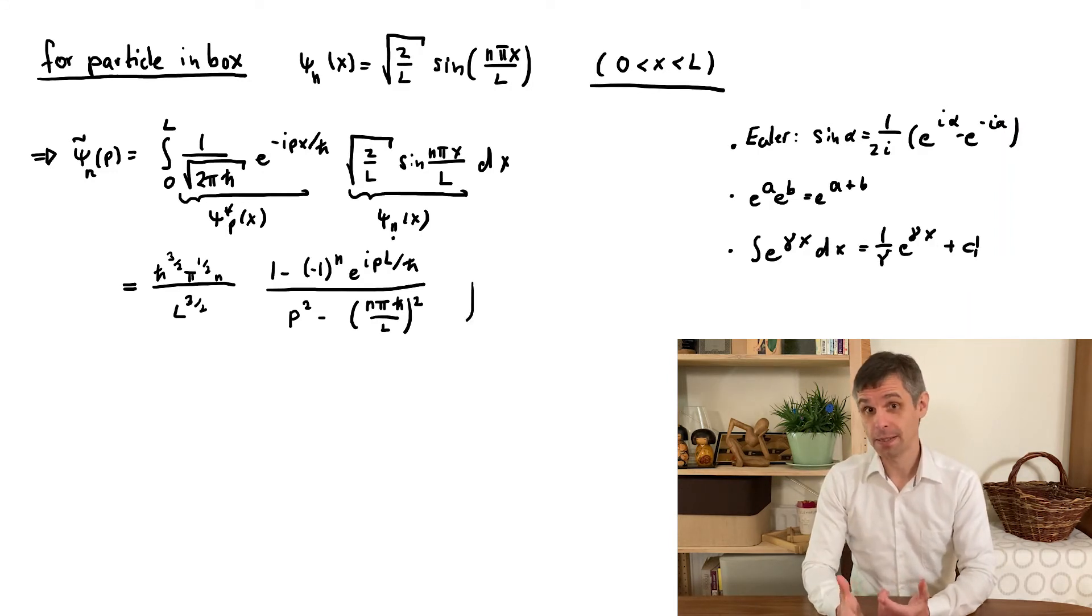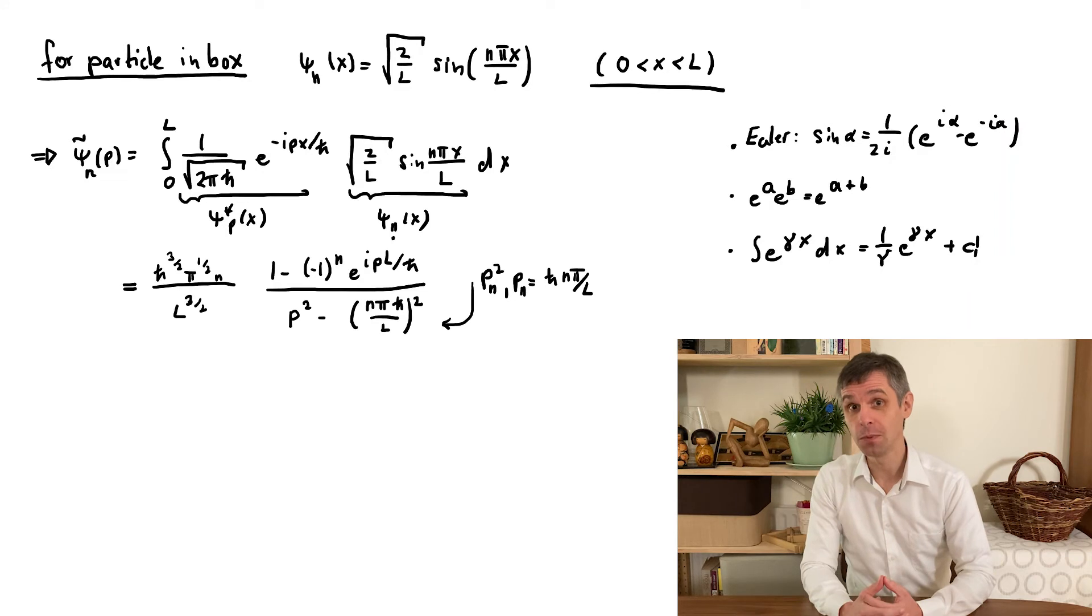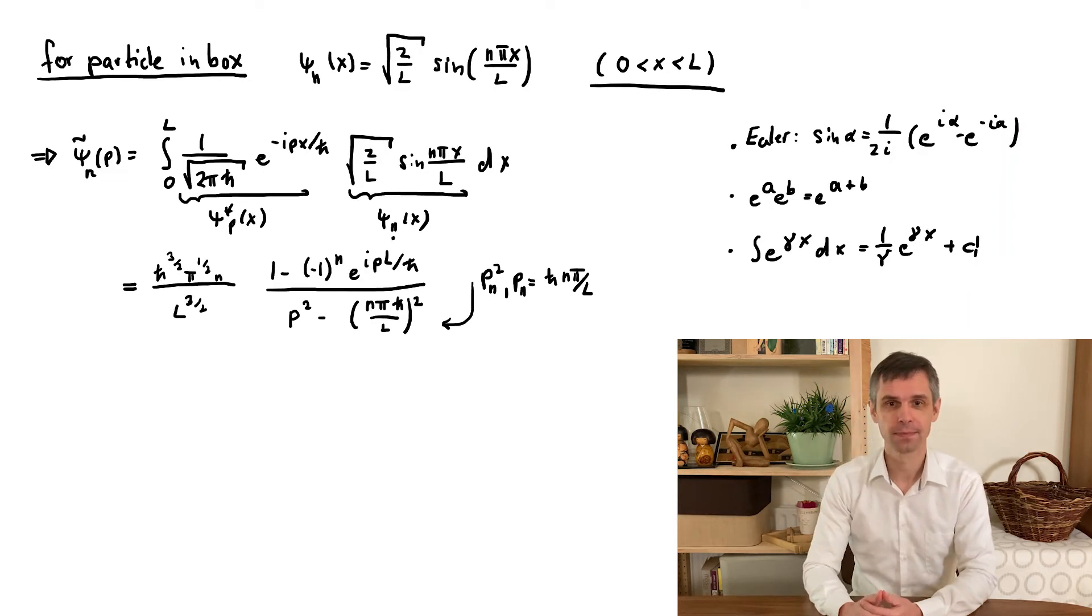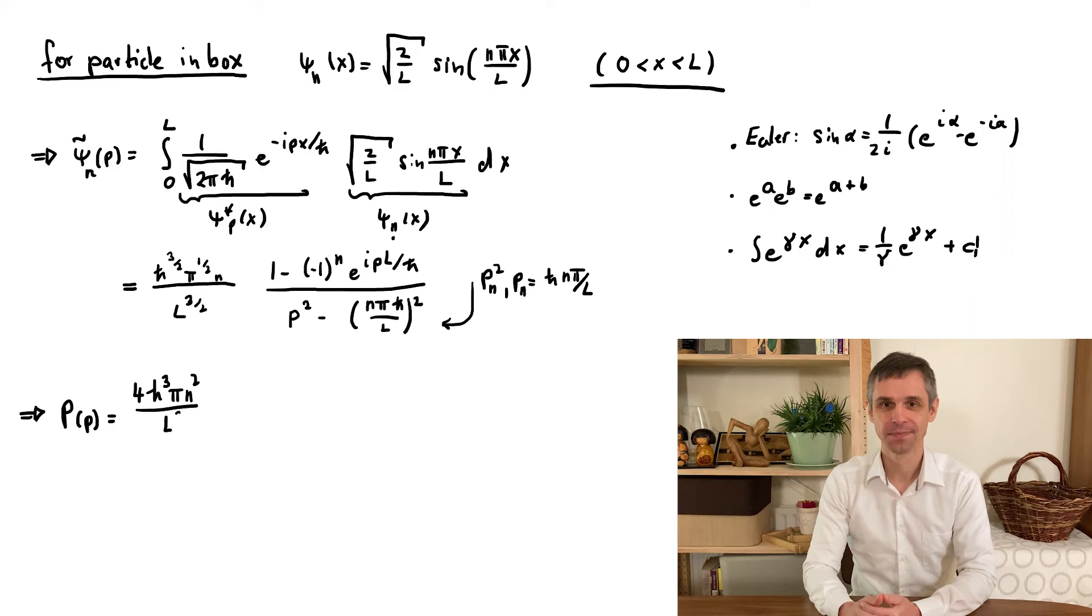The result looks a bit simpler when we identify the expression of pₙ, what one naively might have thought of as a quantized value of momentum. We then square the result to get the probability density for momentum. One can check that it is automatically normalized, another convenient feature of the Fourier transformation.